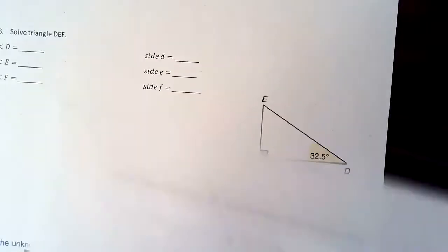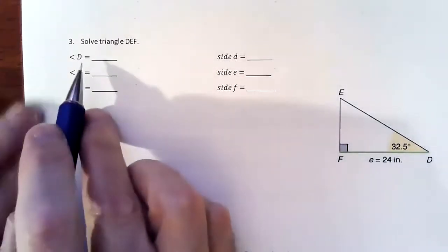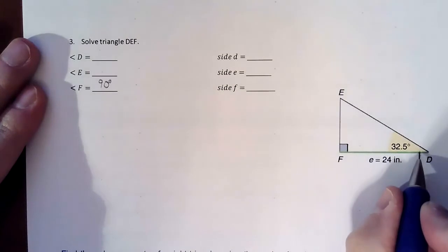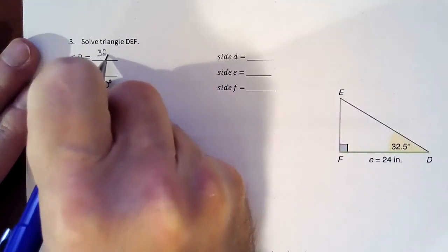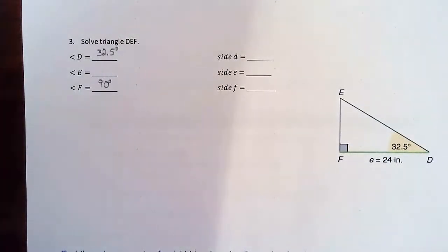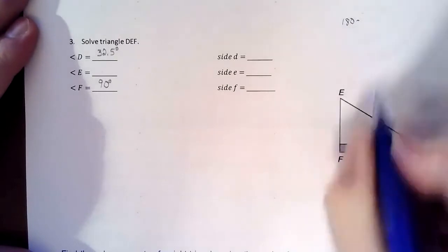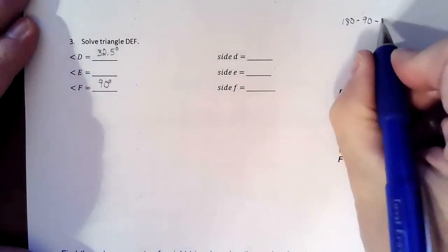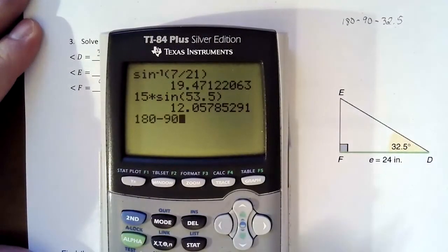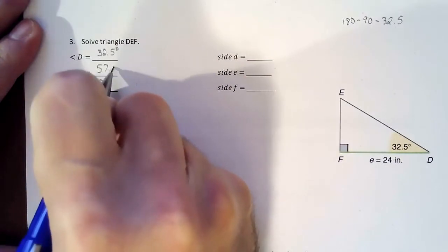So then we'll have one last situation where we are looking to find everything that's missing on this triangle. So we're looking for angle D, angle E, angle F. Angle F we know is 90. We can figure out angle E because we are talking about a triangle, which means these three angles make 180. So if I take 180 minus the 90 degree angle minus the 32.5, we get 57.5.